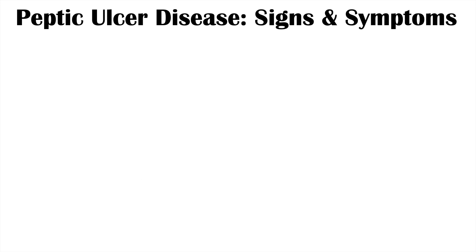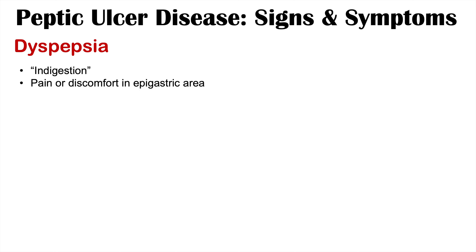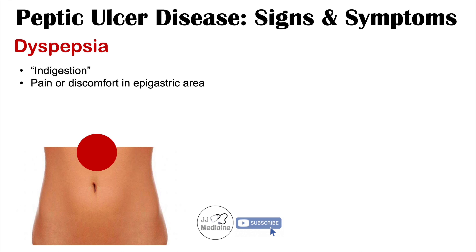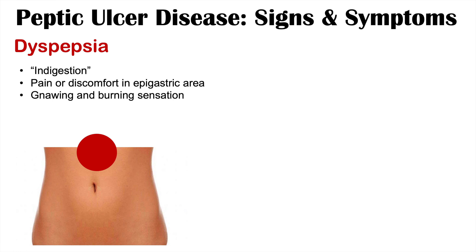If patients do have signs and symptoms of peptic ulcer disease, the most important one to note is dyspepsia — you can think of it as indigestion. It's more of a pain or discomfort in the epigastric area, which is the central upper area of your abdomen above your belly button. It can be described as a gnawing and burning sensation, and the onset of the discomfort or pain differs depending on the type of ulcer.